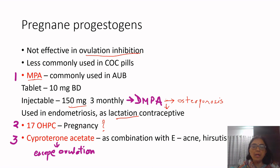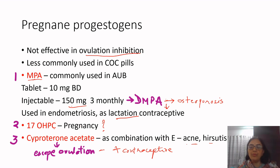Cyproterone acetate is a pregnane with a very strong anti-androgenic action, and that is why it is given in combination with ethinylestradiol whenever a patient presents with acne or hirsutism. However, it also does not effectively suppress ovulation, so escape ovulation can occur. We need to prescribe additional contraceptive advice whenever a woman is on cyproterone acetate for hyperandrogenic symptoms such as acne, hirsutism, or hair loss.